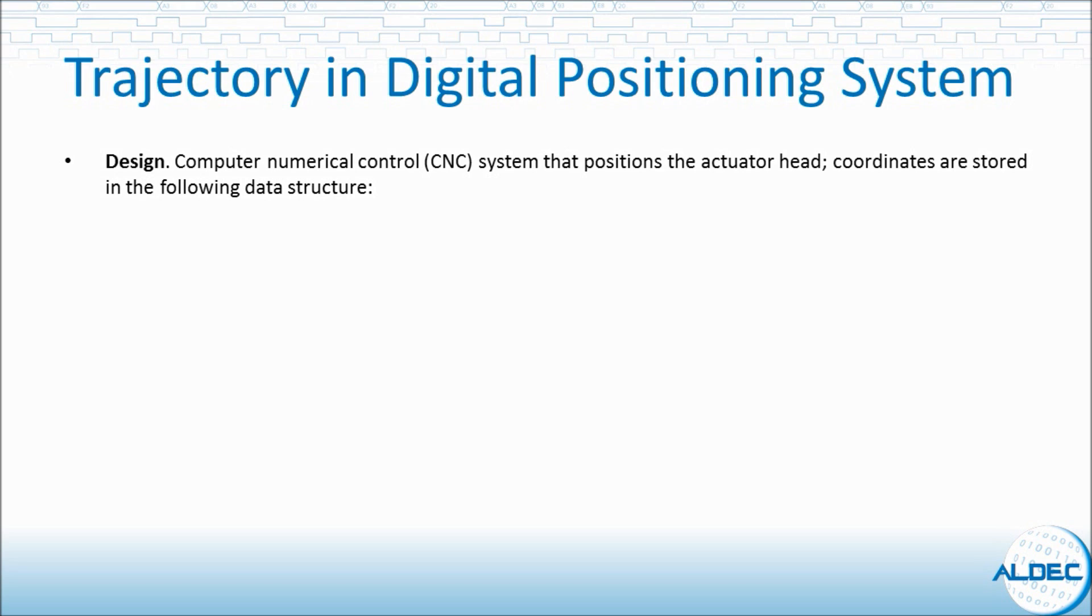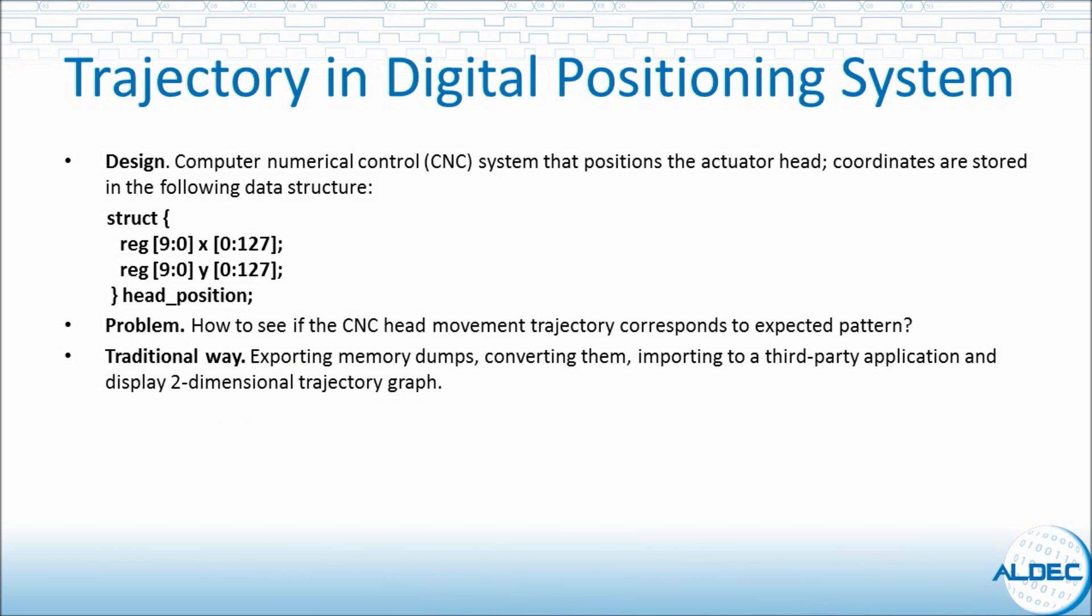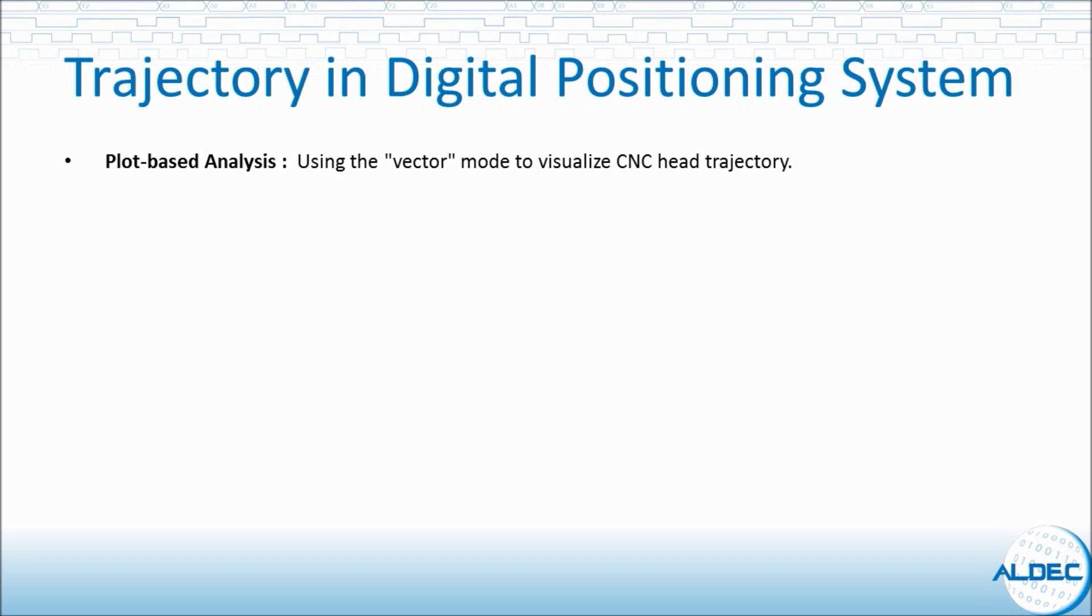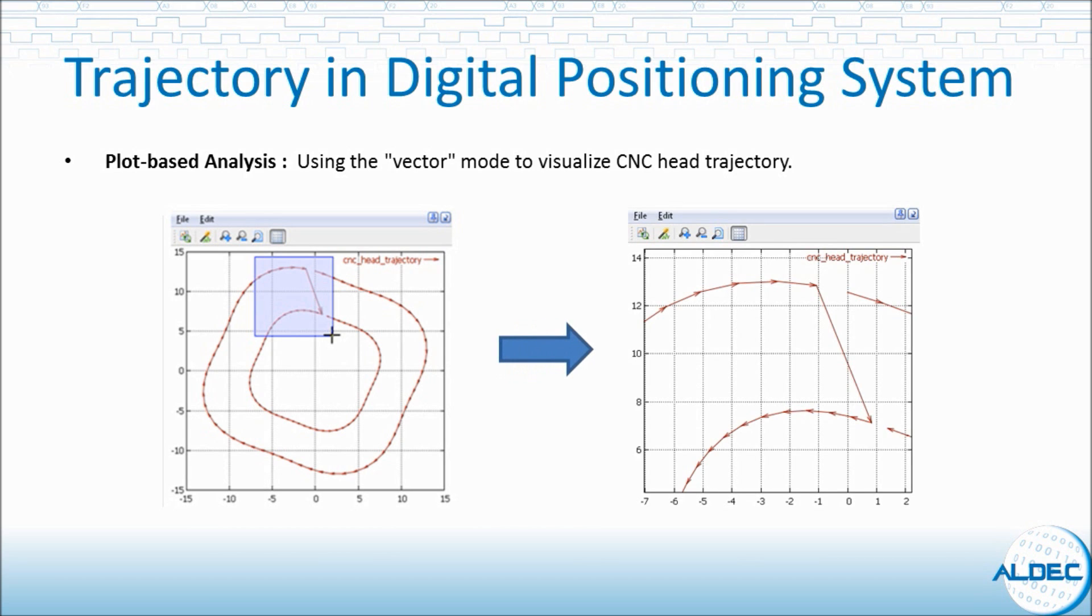Next example we have is a design where the CNC system's actuator head coordinates are stored in a data structure as shown here. It contains a structure with two arrays. The problem here is how would you see the actuator head movement trajectory and make sure it matches the expected pattern. Again, the traditional way would be to create memory dumps, convert them to a format a third party tool can read, use the third party tool to generate a two dimensional graph. Using plot, we can take a look at the CNC head trajectory as shown here. Here, the zoom feature is very important as you can zoom in and see which direction the head is moving.